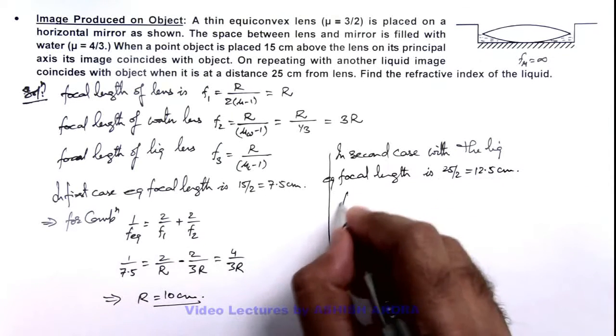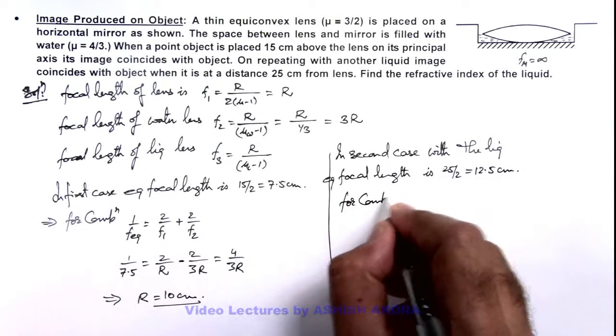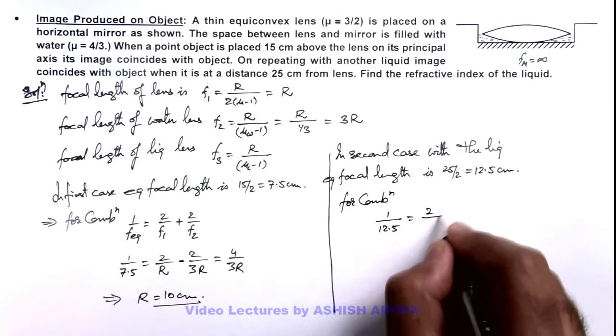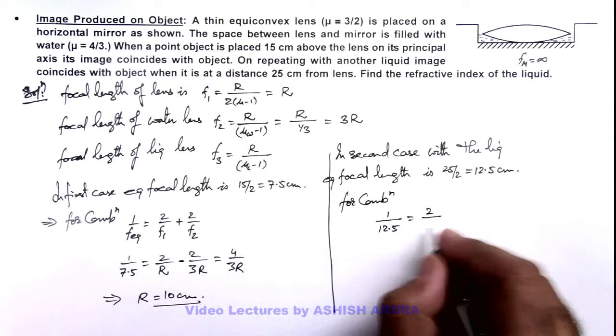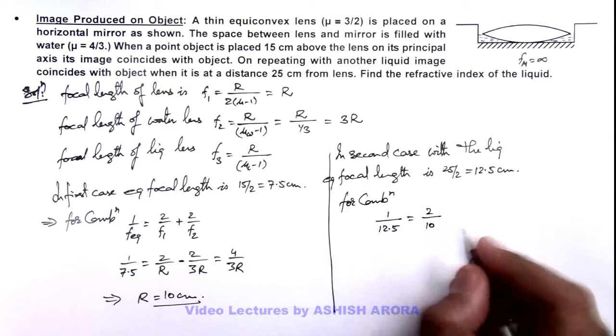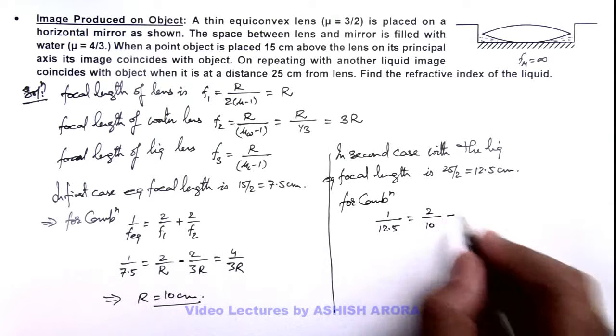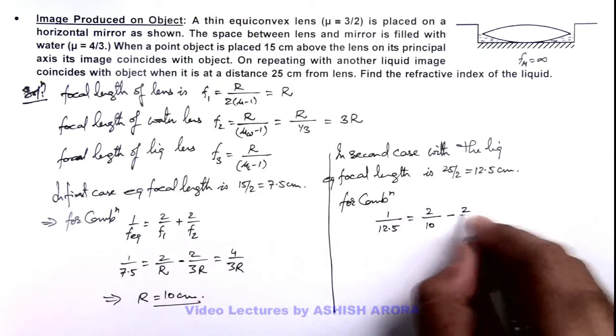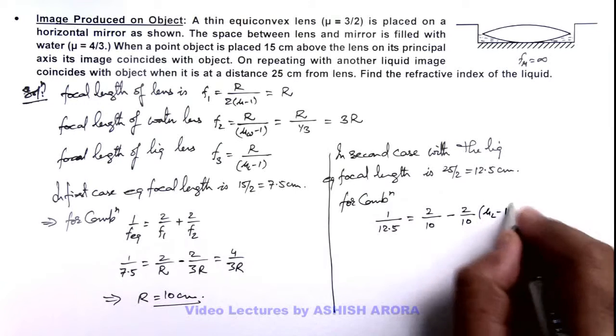So again for combination here we can use 1 by 12.5 is equal to 2 by - the first radius is r that can be taken as 10 centimeter - minus, the second one is 2 by f, the focal length can be taken as r by μ_l minus 1. So this will be 2 by 10 multiplied by μ of liquid minus 1.